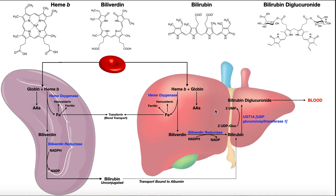If you are the liver, we also have biliverdin reductase that works in the same way. Biliverdin is simply reduced via NADPH into bilirubin. So if you're the liver, you keep the bilirubin and metabolize it further. If you're the spleen, you transport the bilirubin bound to albumin to the liver. So now we have bilirubin here in the liver, and it is unconjugated.